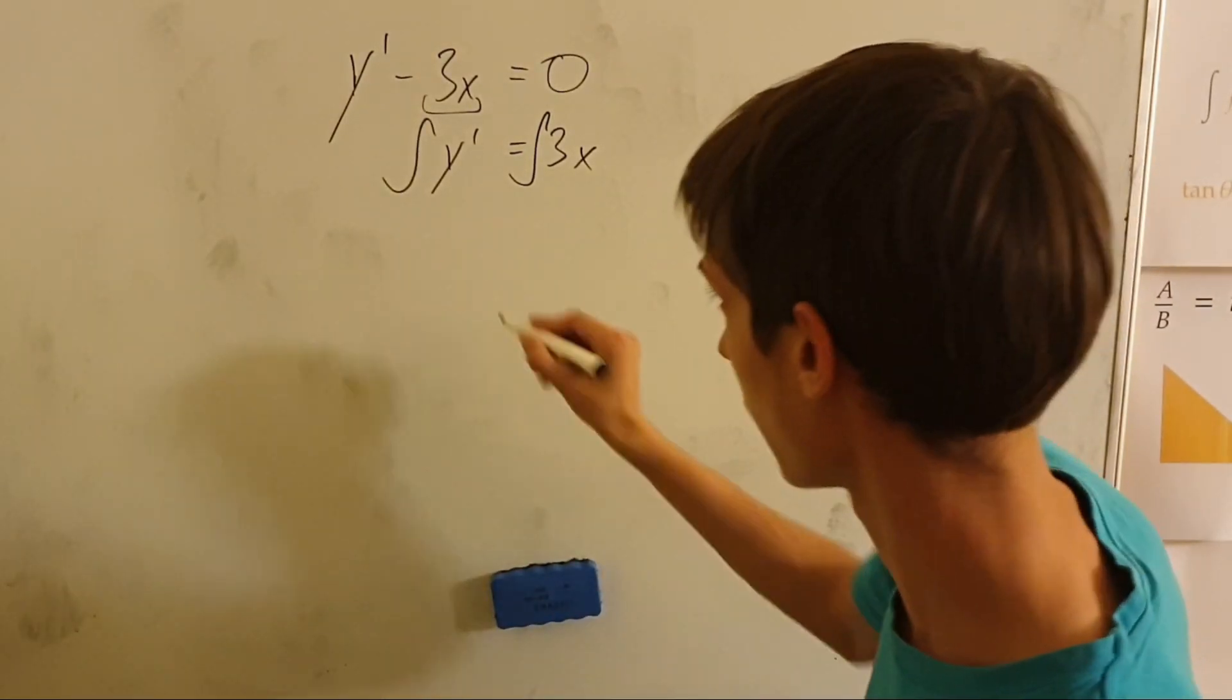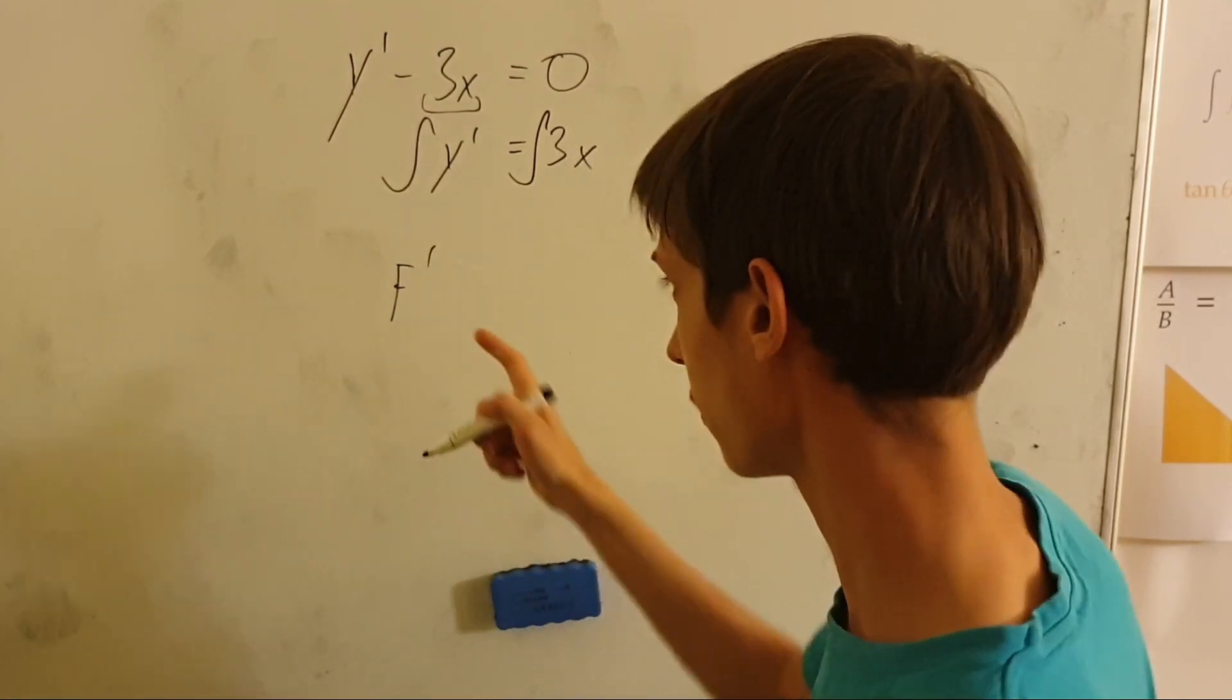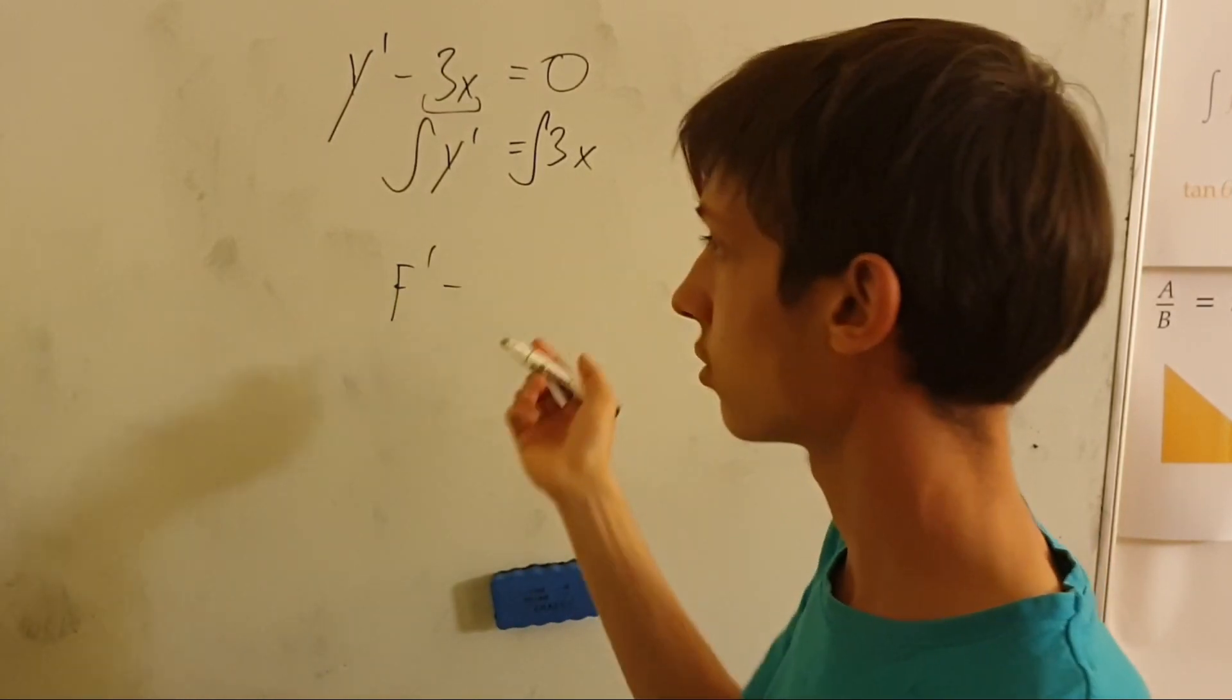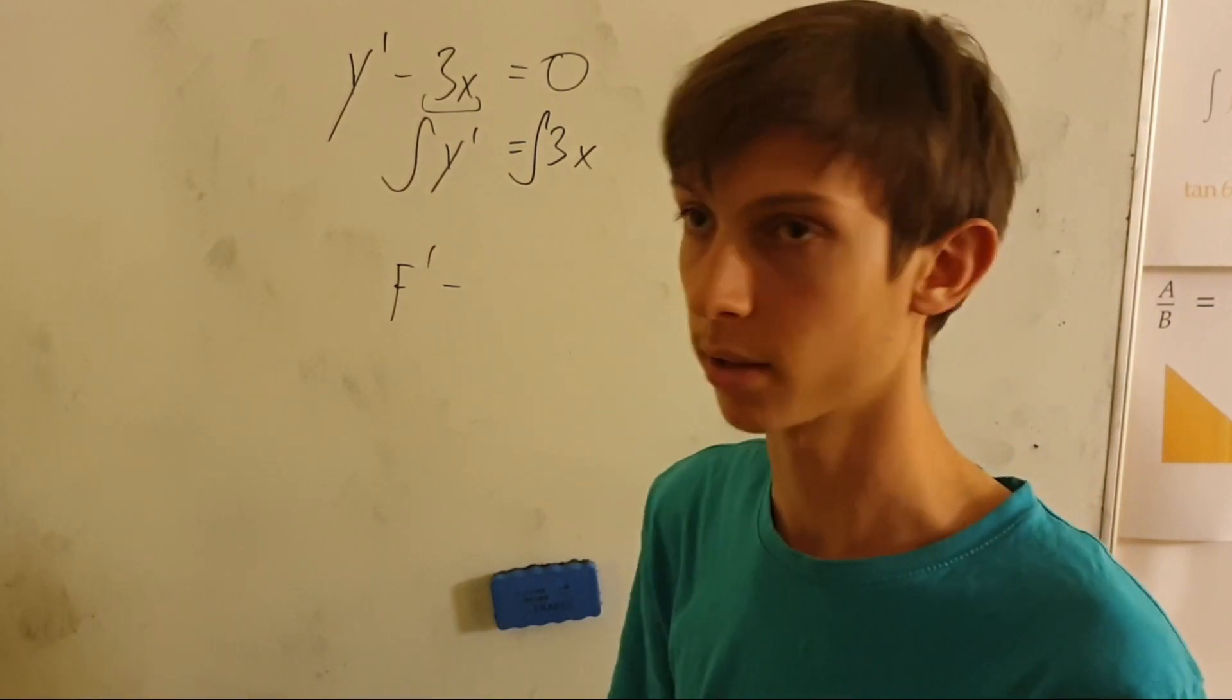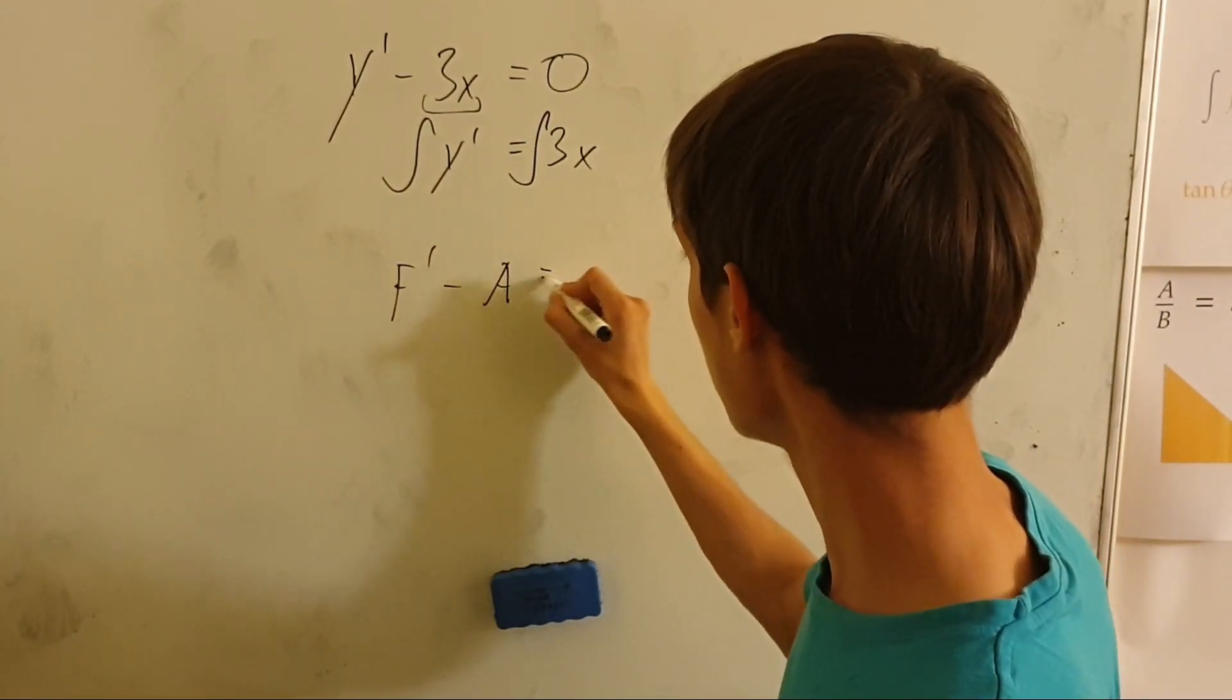We have the scheme like: there's some function f', the derivative of that function, minus (or it might as well work for plus) some function a, equaling zero.